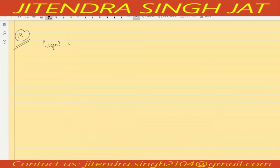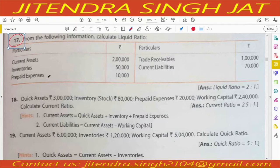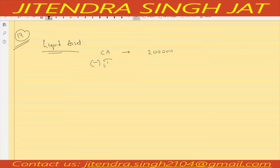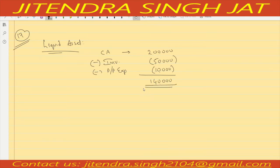I will calculate liquid assets first. Current assets are given as two lakh. We subtract current assets minus inventories and prepaid expenses: minus inventories 15,000 and minus prepaid expenses 10,000. Two lakh minus 60,000 gives us one lakh forty thousand — that is your liquid asset. Current liability is directly given as 70,000.